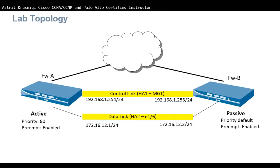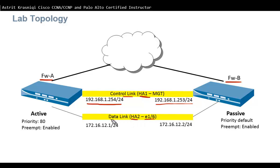This is the lab topology for demonstrating high availability. I have two firewalls: Firewall A accessed at 192.168.1.254 and Firewall B at 192.168.1.253 — both used as HA1 control links via the management interface. A dedicated HA2 data link interface E1.6 will be used, with IP 172.16.12.1 for Firewall A and 172.16.12.2 for Firewall B. Firewall A will be active with priority 80 and preemption enabled; Firewall B will have default priority 100 with preemption enabled.